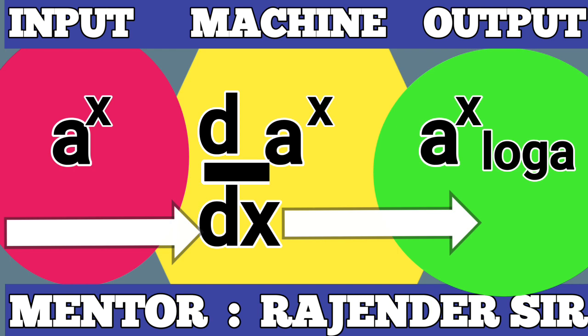So very simple. In the case of e raised to x, if we give the same treatment, then the output will be e raised to x log e. Log e is always 1.